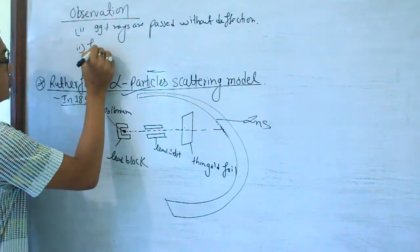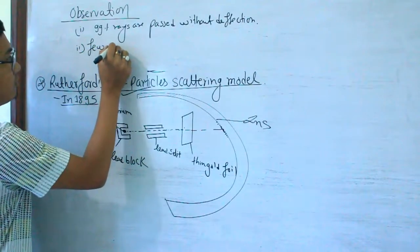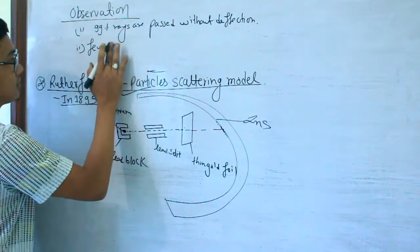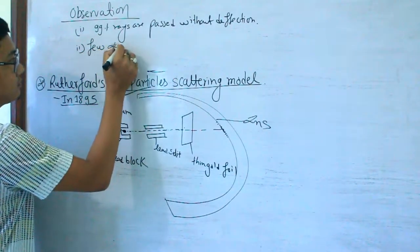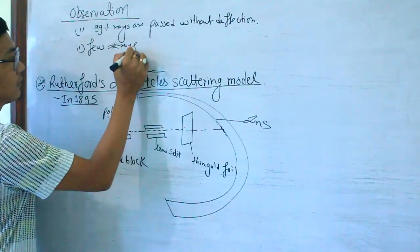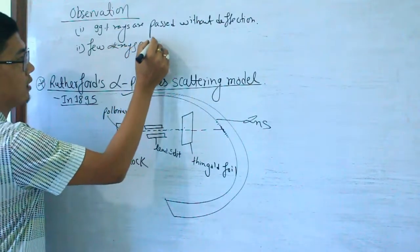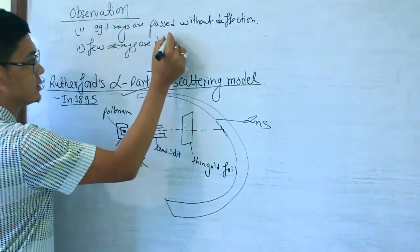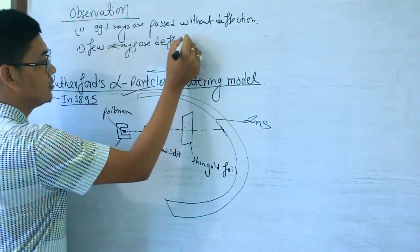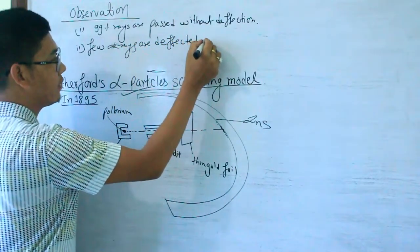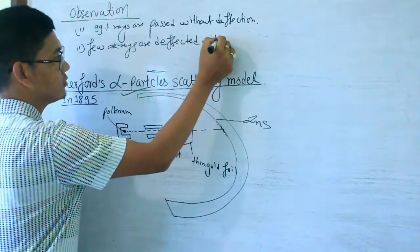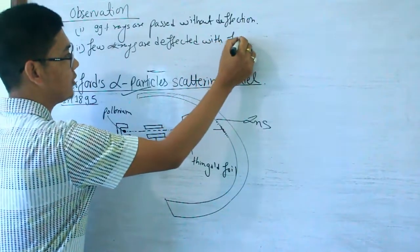The second observation is that a few alpha rays are deflected with small angles.